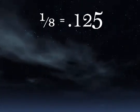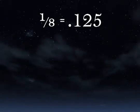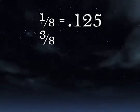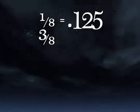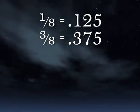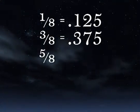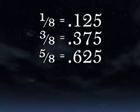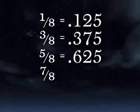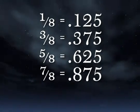The eights are easy. 1 eighth is 0.125. Half of a quarter is 12 and a half cents. 3 eighths is 3 times 0.125, which is 0.375. 5 eighths is 5 times 0.125, or 0.625. 7 eighths is 7 times 0.125, or 0.875.